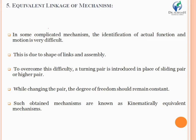It is necessary to identify the motion characteristics of every link. In complicated mechanisms, identifying actual function and motion is difficult. So to identify motion precisely, whatever sliding or oscillating motion exists is converted into turning pairs. The prime condition is that the degree of freedom must not change — the initial and converted mechanisms must have the same number of degrees of freedom.